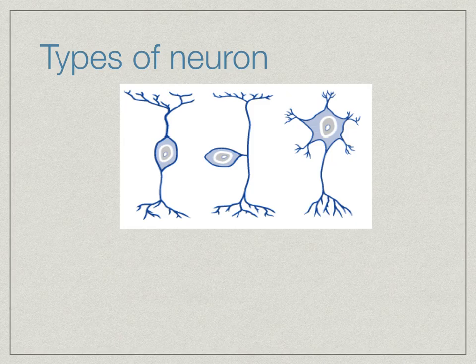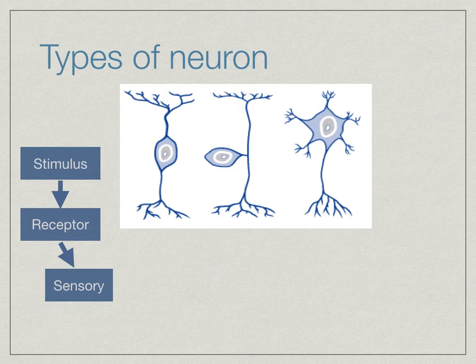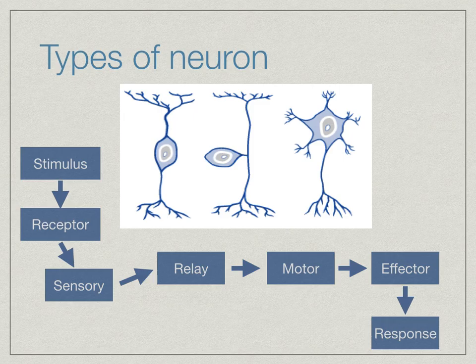Here's an animation showing how things move from a stimulus all the way to a response and how the different neurons are involved. Let's say the stimulus is that you touch something hot. Pain receptors are stimulated, and that's picked up by a sensory neuron. That gets passed on to a relay neuron, which then gets passed on to a motor neuron — connected to muscles, glands, and other effectors. The final response is pulling back your hand very quickly to avoid any long-lasting damage.